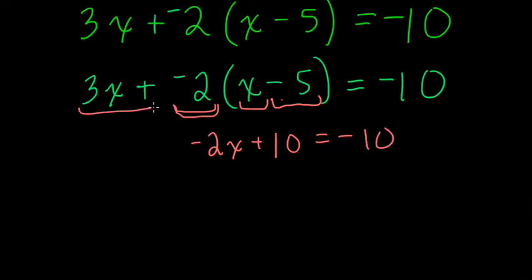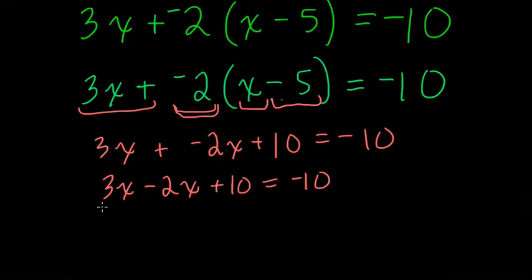And we still want to include this right here. So it's 3x plus this. So if I simplify this now, I get 3x minus 2x, adding a negative 2x, plus 10 equals negative 10. So now, 3x minus 2x, that's just x.